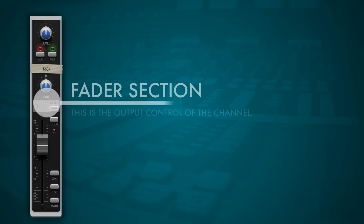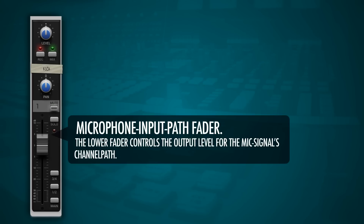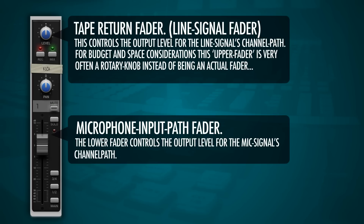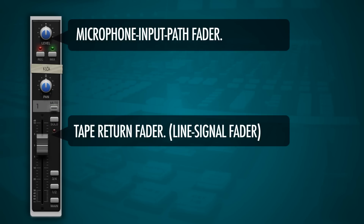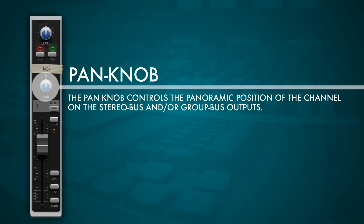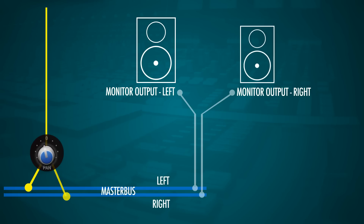Below that we usually find the fader section, which has a lot more going on than just a fader. Depending on the console model, we may have two groups of faders: the input fader and the tape return fader. For budget and space reasons, the upper row is often a knob rather than an actual fader. The flip switch at the top allows us to swap these two during mixdown. In the fader section we also find the pan knob. We should visualize the master bus as two horizontal lines — left and right. Panning to the left decreases the level on the right bus, making the sound appear to come more from the left.